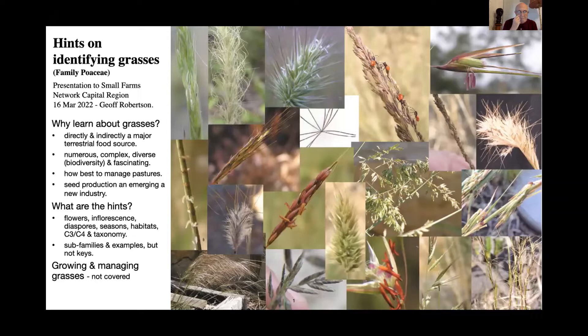So what are the hints? We're going to talk about the flowers — grasses are flowering plants. We'll talk about the inflorescence, which is how the flowers in the grass reveal themselves, as you can see on screen with many different examples. The next thing is diaspores — this is the part of the grass that spreads, contains the seeds, and things like awns. We'll look at how those things spread and turn into new plants.